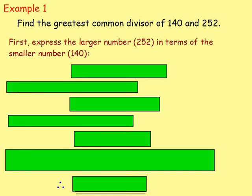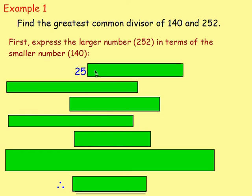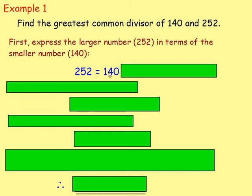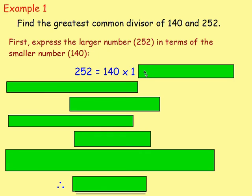Example 1: find the greatest common divisor of 140 and 252. These numbers are bigger, so thinking of all the factors is hard. The way you do it: first express the larger number, 252, in terms of the smaller number. So, 252 equals 140 times 1 plus 112, since there is 1 lot of 140 in 252 with a remainder of 112.